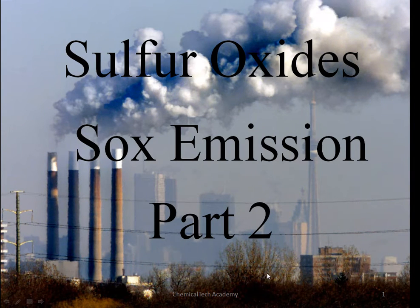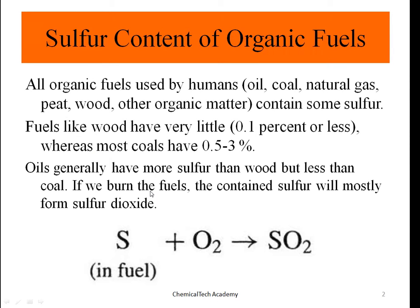In this video I want to give you more details about sulfur oxides and their emission. If we have sulfur content in organic fuels, how much SO₂ can we produce? All organic fuels used by humans — oil, coal, natural gas, peat, wood, or any other organic matter — contain some sulfur. Fuels like wood have a very little amount of sulfur, for example 0.1% or less, while coal has a very high sulfur content, usually from 0.5 to 3%.